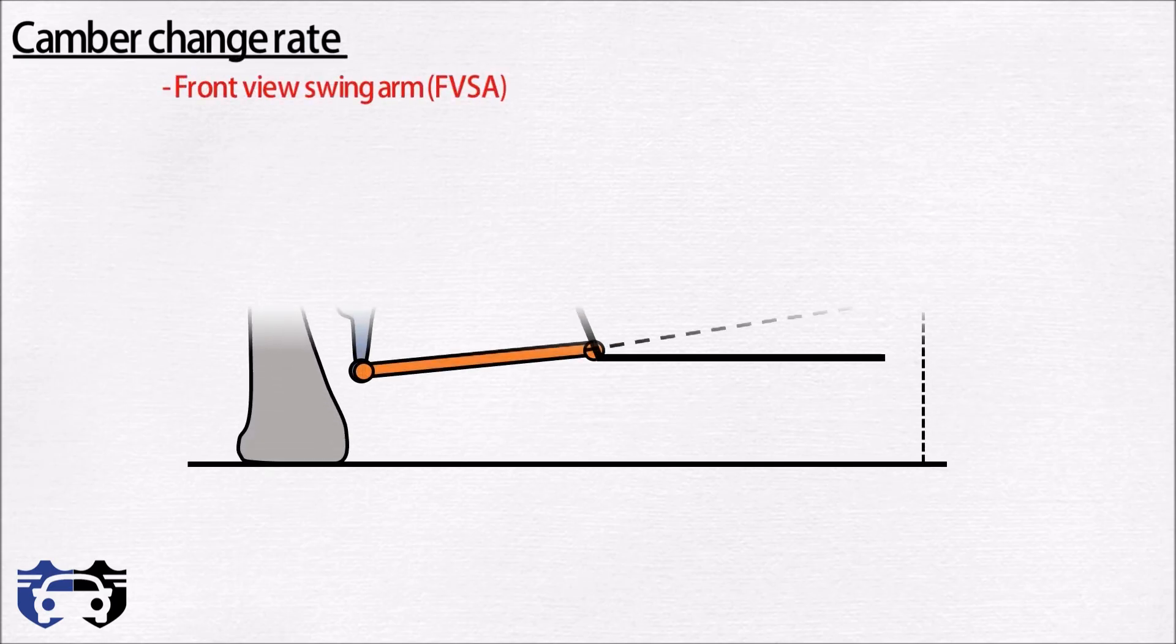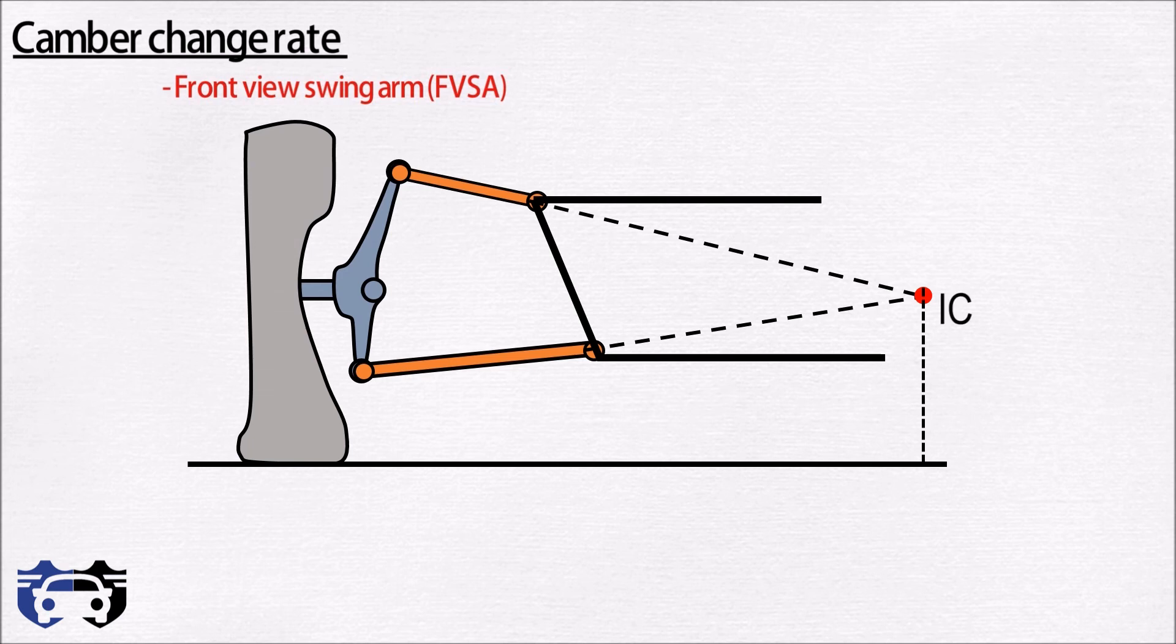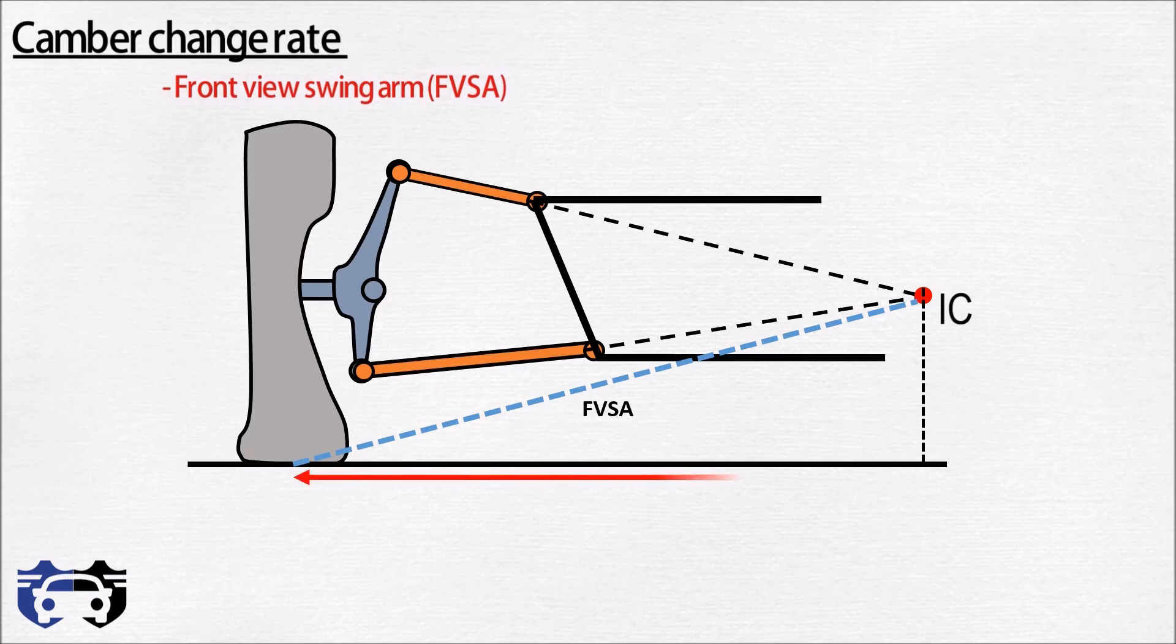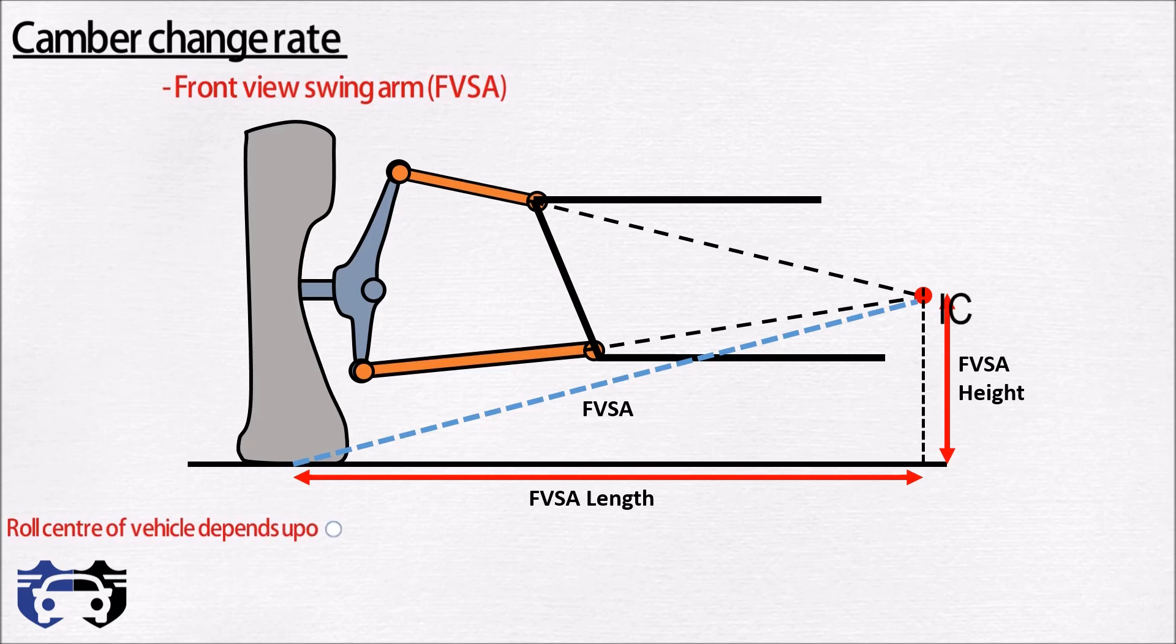Before understanding the camber change rate you should know what is front view swing arm. Here in this geometry you can see this is the instant center IC. The blue line from the contact patch to the instant center is called the front view swing arm. The distance of IC from the tire center contact patch is called the FVSA length, and the height of IC is called the FVSA height. The roll center of vehicle depends upon the FVSA height and the FVSA length.